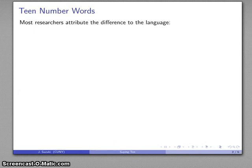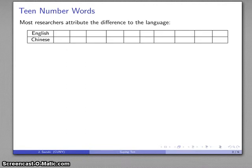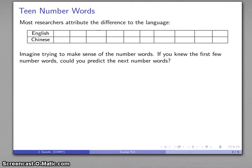Well, most people who study this actually attribute the difference to the language, to the number words that are used in Chinese versus the number words that are used in English. And so for that, let's take a look at what those number words are. And imagine that you're learning the language, which children are. And if you knew the first couple of number words, could you predict what the next number words are? What pattern is beneath the naming of the numbers?